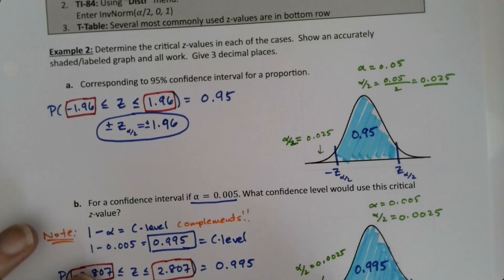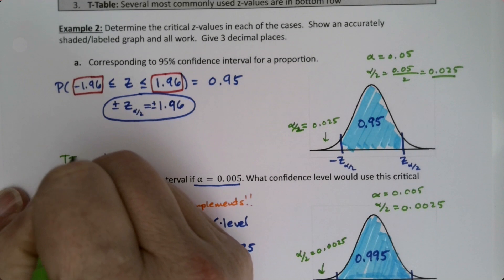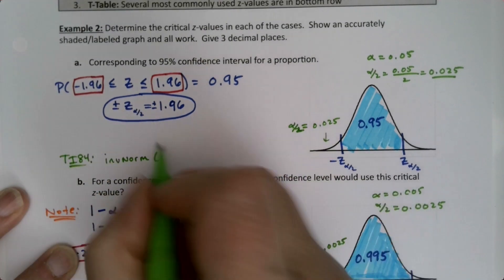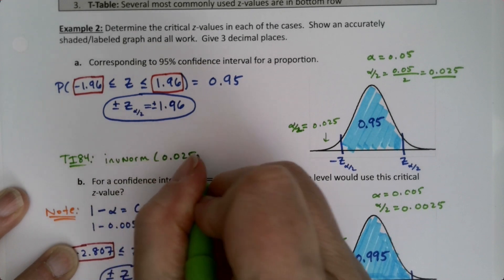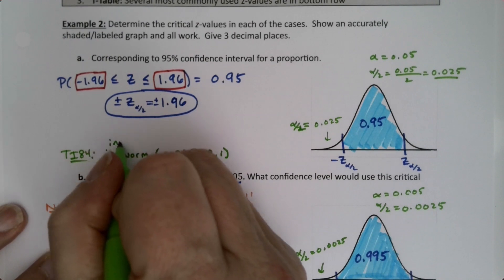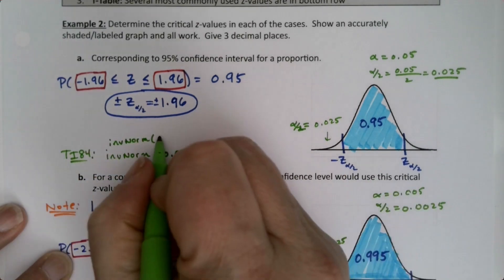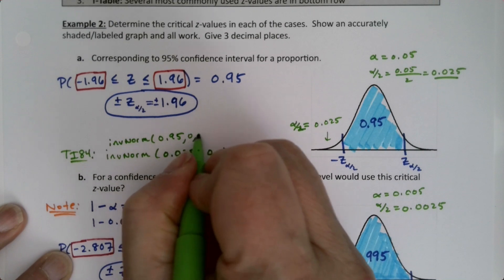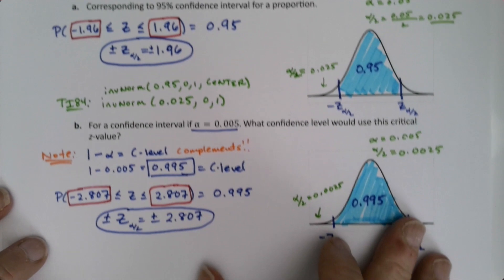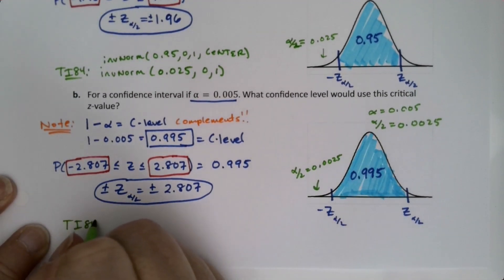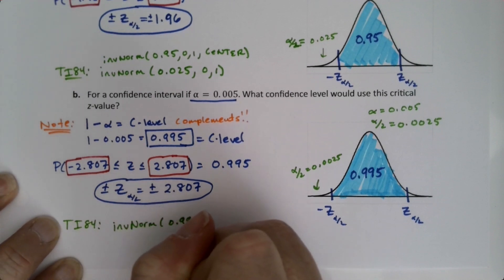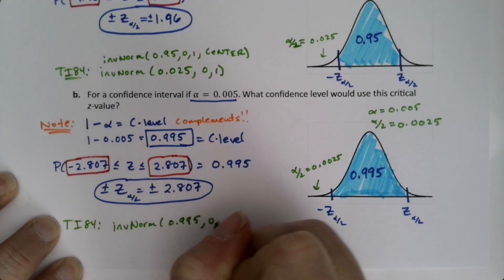So, I can write it down for myself just so you can see. It was inverse norm. So, this is the TI-84. It was inverse norm. I'm going to write the old one because that's the one that is harder to do. 0.0025, 0, 0, 1, right? Or you could do inverse norm. If you have a new calculator, you'd say 0.95, 0, 1 center. Like that. Down here, it would be inverse norm, 0.995, 0, 1 center.